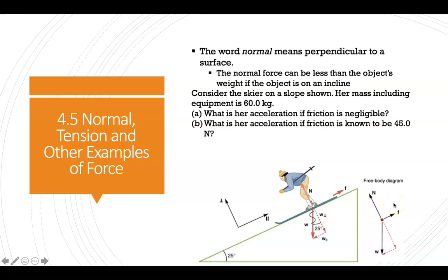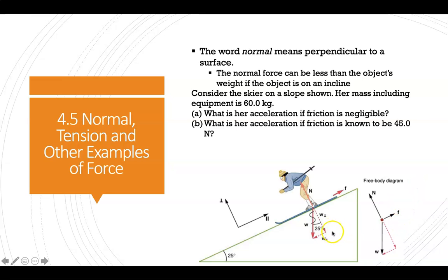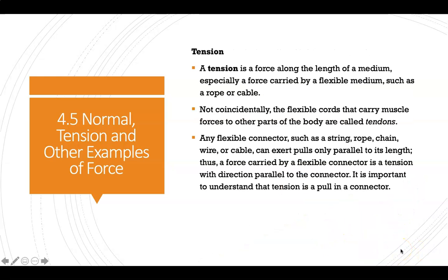The two questions asked are: what is acceleration if friction is negligible, meaning zero? And what is acceleration if we insert a friction force of 45 newtons? In order to do this, we want to figure out how to break weight into its two components given the 25-degree angle and the 60 kilograms of mass. We know that W equals mass times g, so we can figure out the perpendicular and parallel forces using our trigonometry principles. I will film another video that goes through some of these problems.